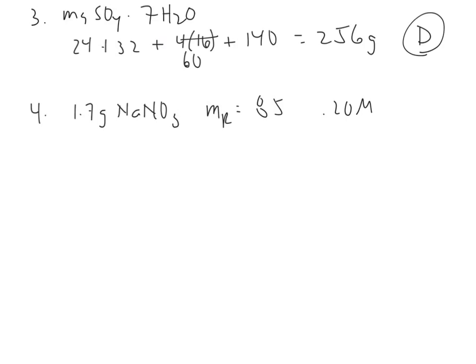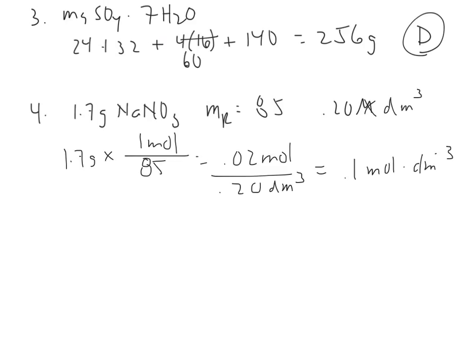Number 4 tells you they dissolved 1.7 grams of NaNO3 with a relative molar mass of 85 in 0.2 decimeters cubed. I thought it was the molarity, but this is the volume, the decimeters cubed, and they want to know the molarity. So I have to take the 1.7 grams, change it into moles, divide by the 85, and you get 0.02 moles, divide by the 0.20 decimeters cubed you have, and you should come up with 0.1 moles per decimeter cubed, which matches letter B.